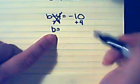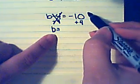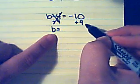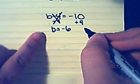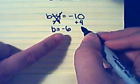Now I need to solve this side of my equation. Negative ten plus four. Negative ten plus four is negative six. So here I found that b equals negative six.